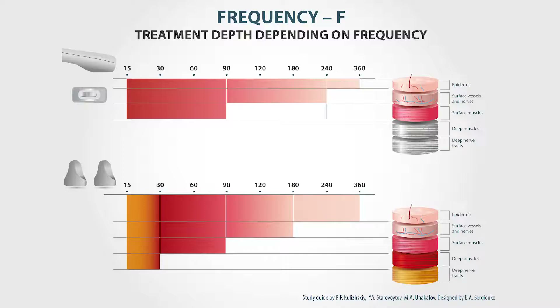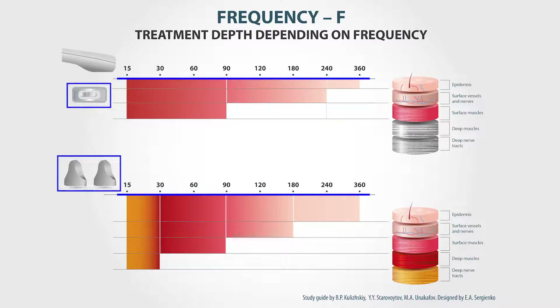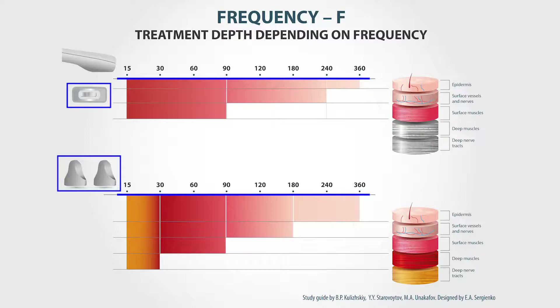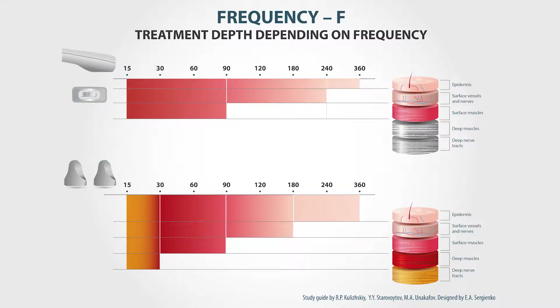The next parameter we are going to talk about is the treatment frequency. The treatment depth will depend on the frequency and also the type of electrode you use for the treatment. That is why we have two different graphs that represent two different types of electrodes: the built-in electrode and the Pond's paravertebral electrode. We need that to understand what exactly scanner treatment focuses on.